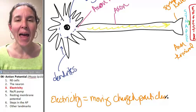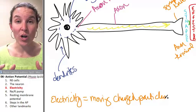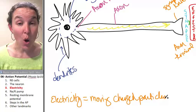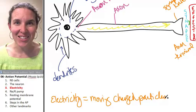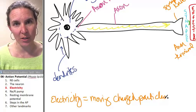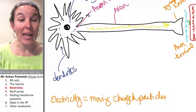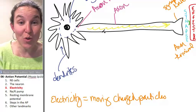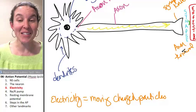But if somehow we can set up a situation where charged particles will move along the axon and the dendrites down to the axon terminal or the synaptic knobs, if we could get charged particles to move somehow through this space, then we could create an electrical message.